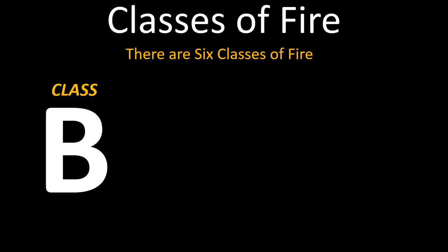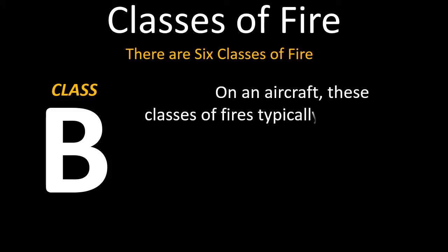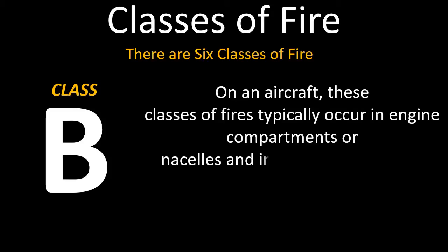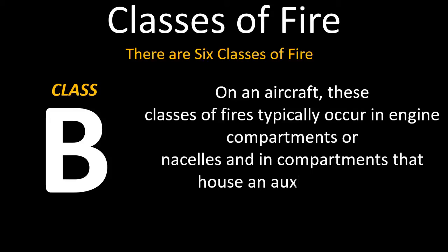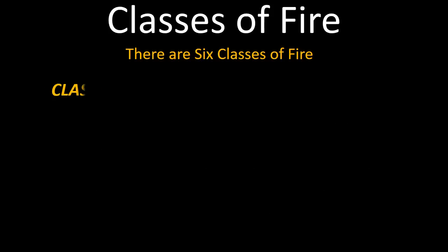Class B fires are composed of combustible liquids such as gasoline, oil, jet fuel, and many of the paint thinners and solvents used in aviation maintenance. On an aircraft, these classes of fire typically occur in engine compartments or nacelles and in the compartments that house an auxiliary power unit. Since operating temperatures within these areas can be extreme, overheat detection systems which sense the rate of temperature rise are often used to monitor these zones for the presence of fire or overheat conditions.